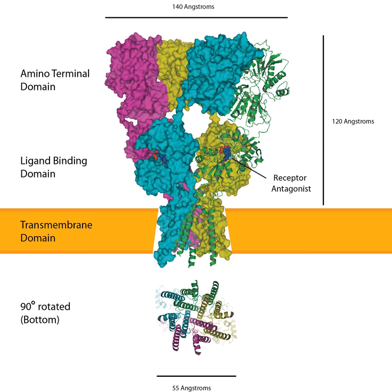Therefore, LTP can be induced experimentally in a paired electrophysiological recording when a presynaptic cell is stimulated to release glutamate onto a postsynaptic cell that is depolarized. The typical LTP induction protocol involves a tetanus stimulation, which is a 100 Hz stimulation for one second. When one applies this protocol to a pair of cells, one will see a sustained increase of the amplitude of the EPSP following the tetanus.